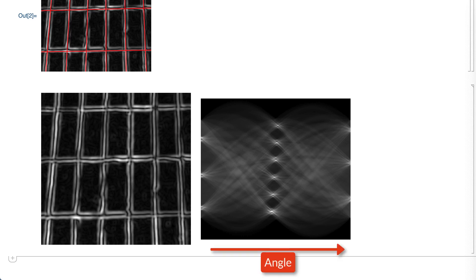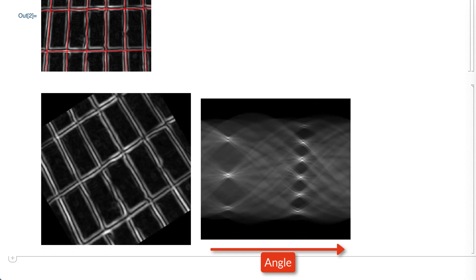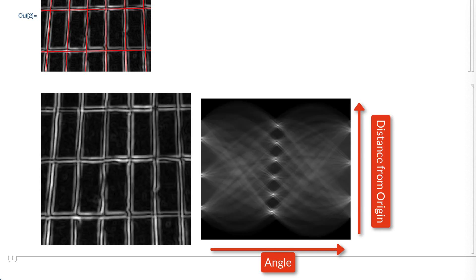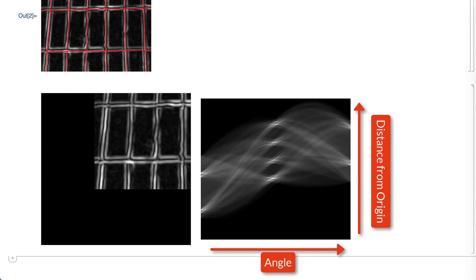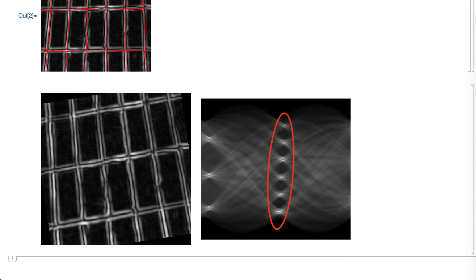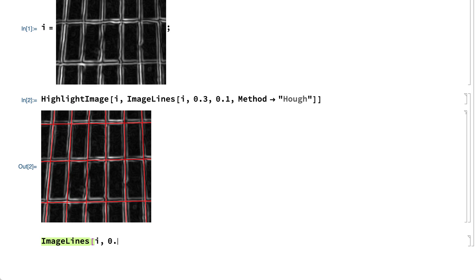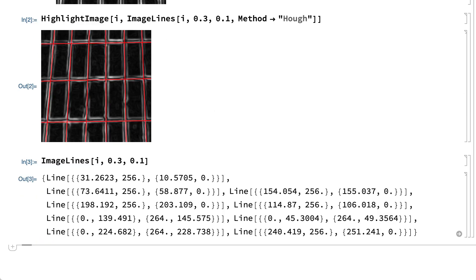Here is a demonstration that has been set up to illustrate that process. The image on the right is generated by the Radon function, which essentially does a Hough transform, except that instead of returning lines like the ImageLines function, it displays the result as an image, with points in the result image representing different lines in the original image. The horizontal coordinate in the result corresponds to the angle of the line, so rotating the original image moves points in the result from side to side, and the vertical coordinate corresponds to the distance of each line from the origin, so translating the original image moves the coordinates in the result up and down. In this example, the six points in a row in the result correspond to the six roughly vertical lines in the original image, and the other three points correspond to the three horizontal lines. The ImageLines function does a similar calculation but returns the result as a list of line graphics primitives rather than as an image.